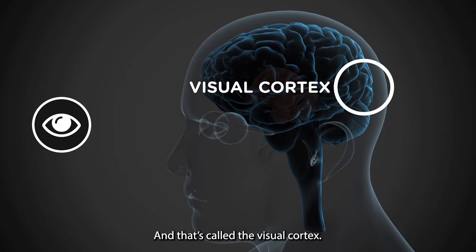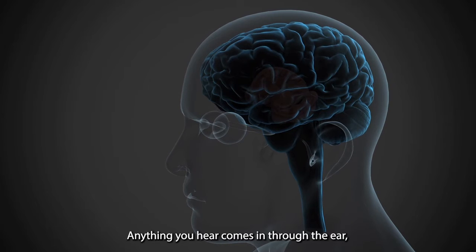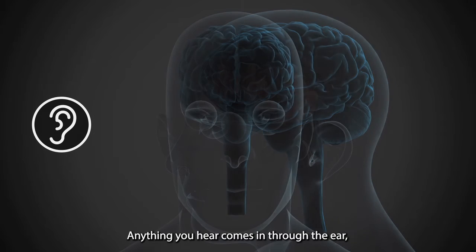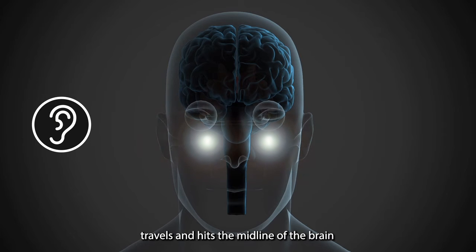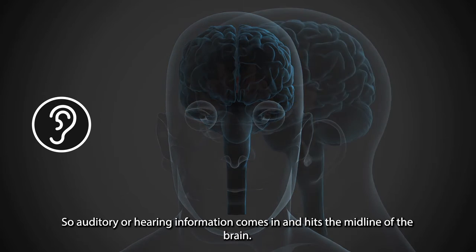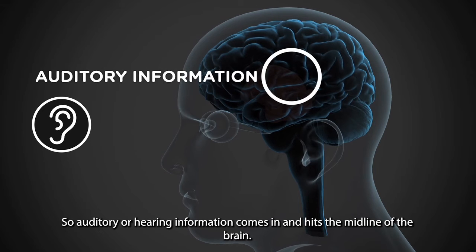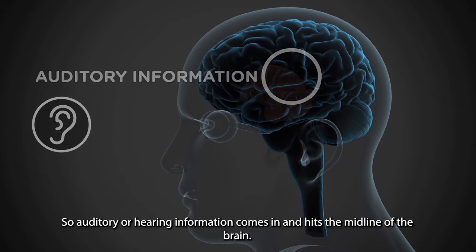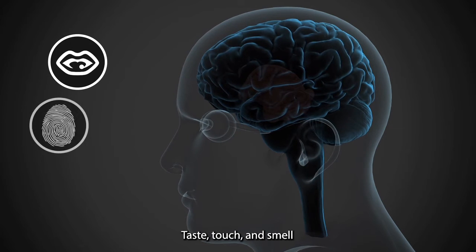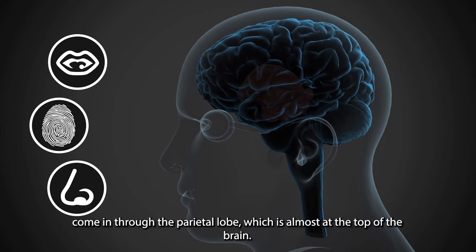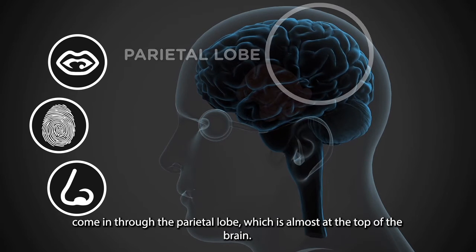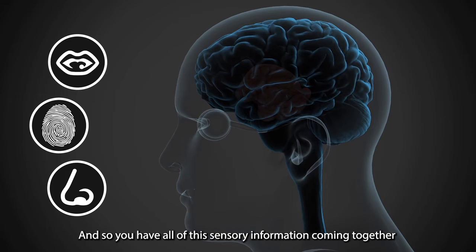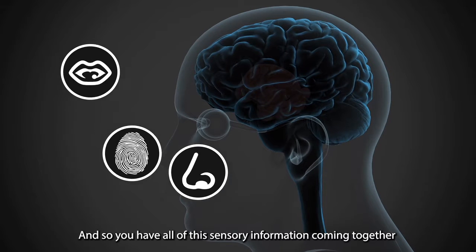That's called the visual cortex. Anything you hear comes in through the ear, travels and hits the midline of the brain — so auditory or hearing information hits the midline of the brain. Taste, touch, and smell come in through the parietal lobe, which is almost at the top of the brain. And so you have all of this sensory information coming together.